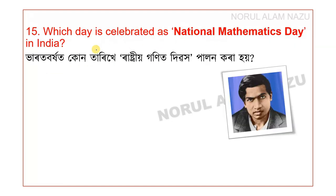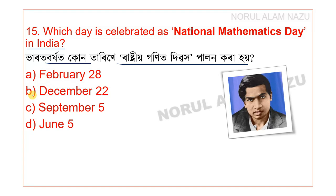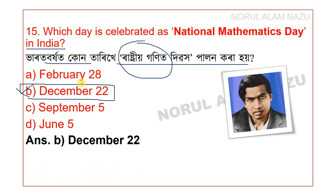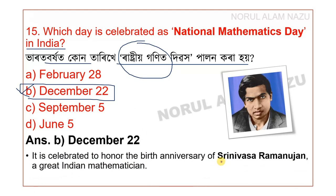Question number 16: Which day is celebrated as National Mathematics Day in India? The answer is December 22. This day is celebrated as National Mathematics Day because it is the birthday of the famous Indian mathematician Srinivasa Ramanujan. Also, 28 February is National Science Day, September 5th is Teachers' Day, and June 5th is World Environment Day.